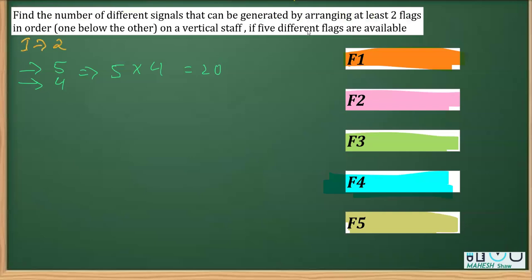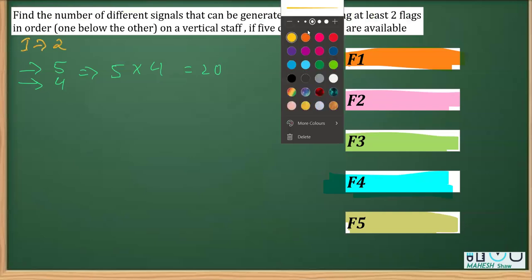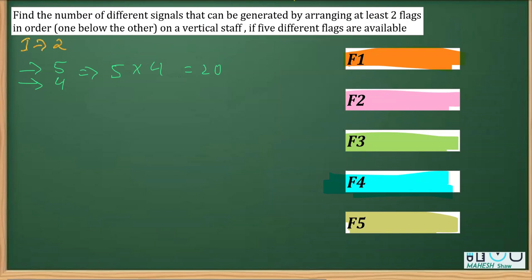Now in the next case, we have case two when we can take three flags. So using three flags, we have these slots available where the first choice will be any of these five, then four and then three. So that means 5×4×3 which is equal to 60.